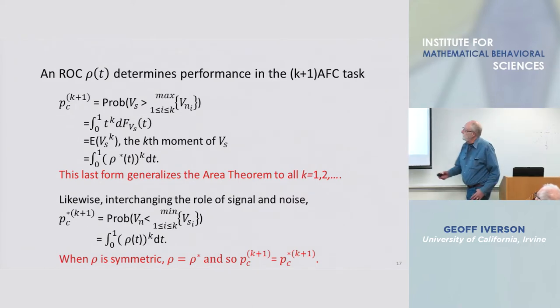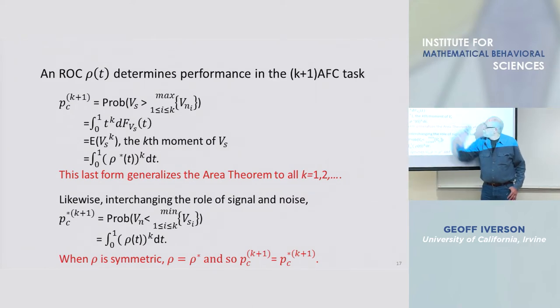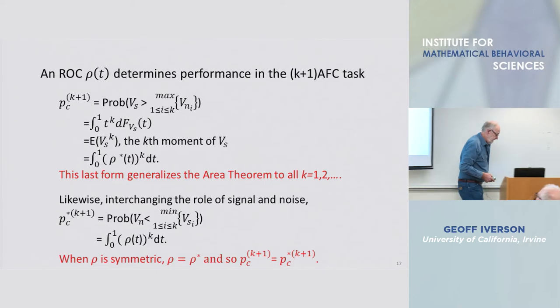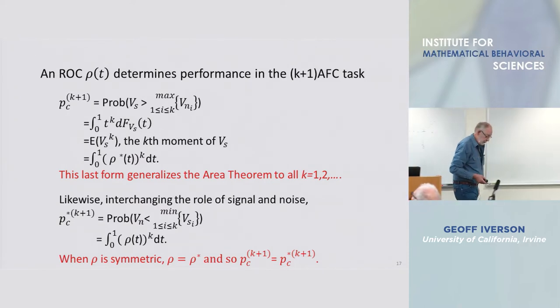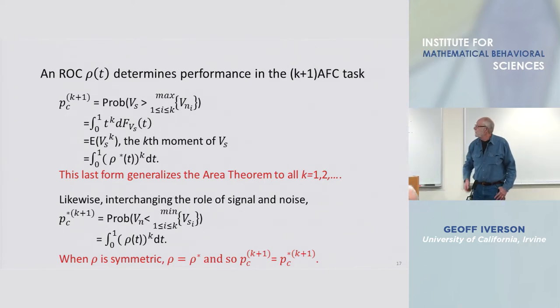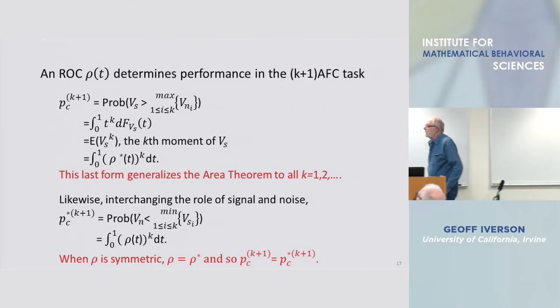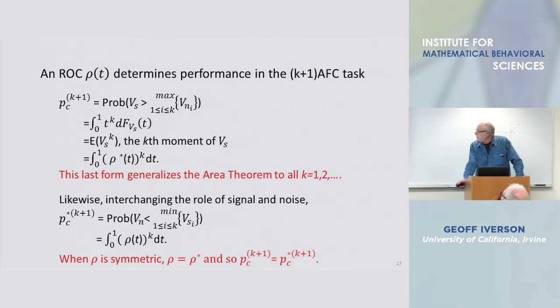It turns out that the probability correct in a standard k plus one forced choice task is a moment. Indeed it's the kth moment of that random variable that is determined by the ROC and concentrated on zero one.